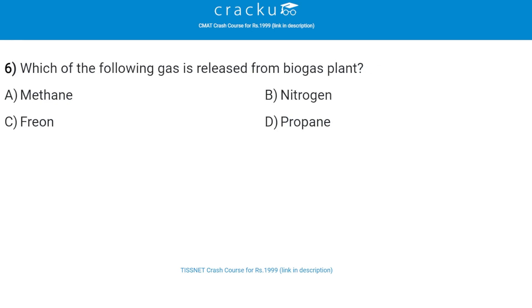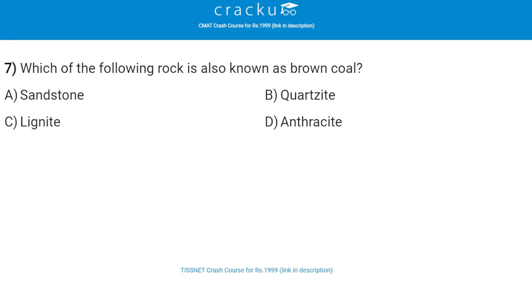Next: which of the following gas is released from a biogas plant? The correct answer is methane, that is option A. Next: which of the following rock is also known as brown coal? The correct answer is lignite, that is option C.